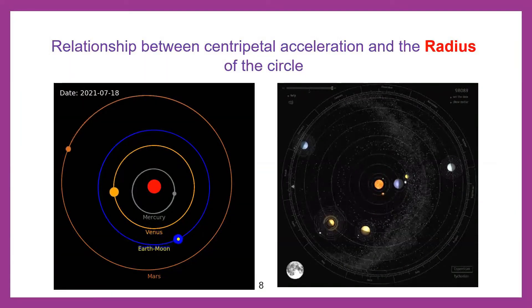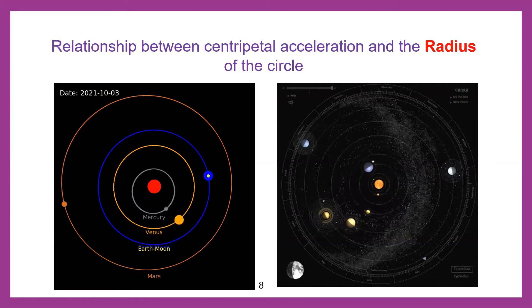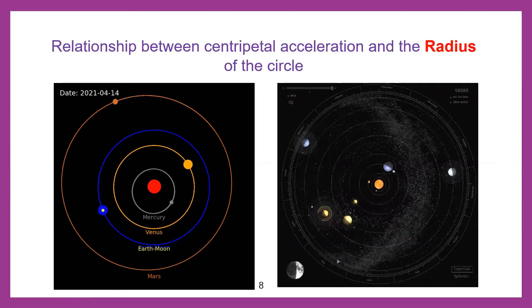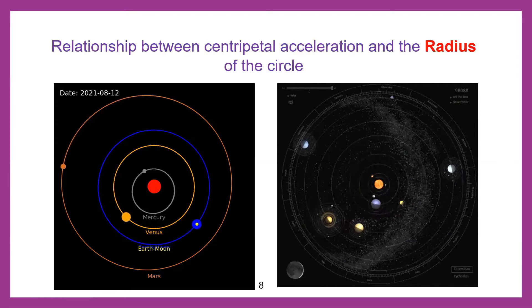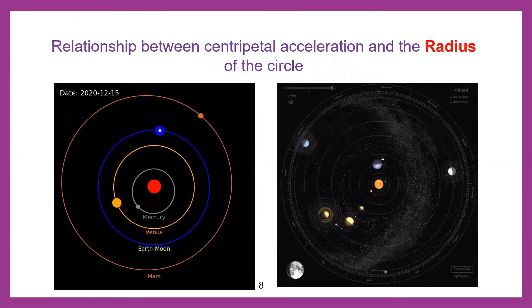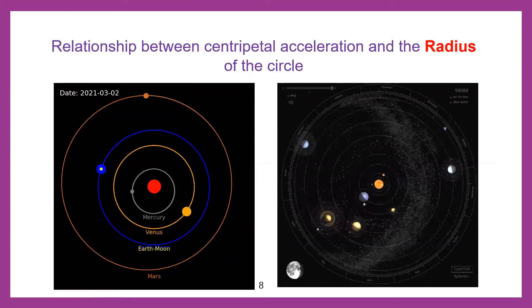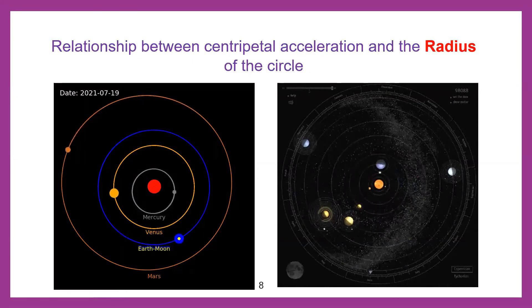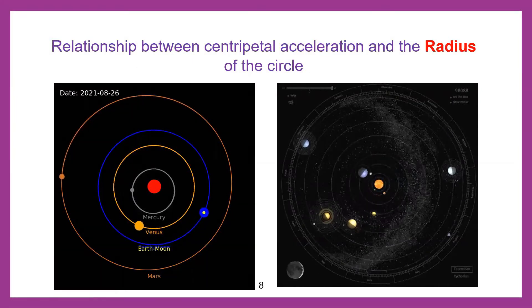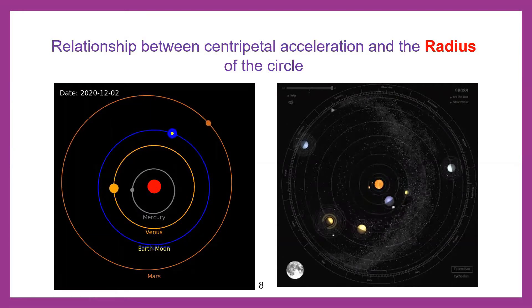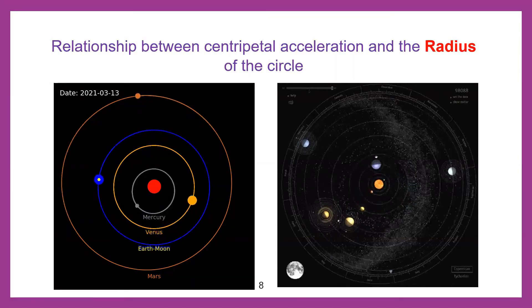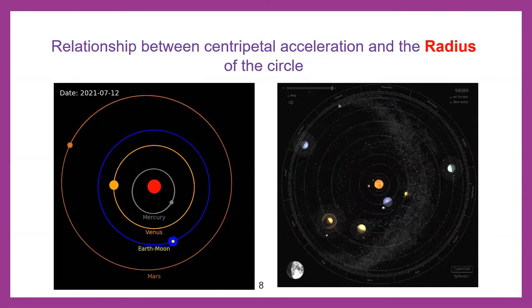The planets away from the sun, like Uranus and Neptune, move extremely slow. In other words, the planets with small radius have more acceleration, and the planets with big radius, which are very far away, accelerate slowly. So this reality of the movement of planets in circular orbits proves that acceleration is inversely proportional to the radius.